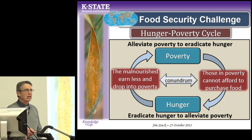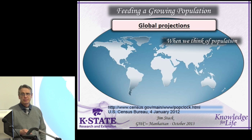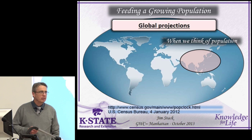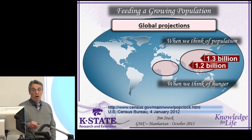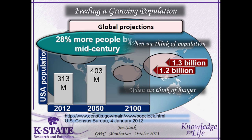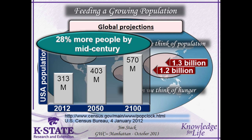When we think of population, our minds are naturally drawn to Asia — China and India represent one third of the world's population. In 2012, the U.S. population was 313 million. In 2050 it's projected to reach 403 million — that's 28% more people in the United States than we have now. By the end of the century, the population of the United States is going to be 570 million people — that's 82% more people than we have today. We add one person every 14 to 16 seconds, taking into account births, deaths, and immigration. The U.S. is currently a major food exporter — if its population grows by 82%, will we still be able to export food?